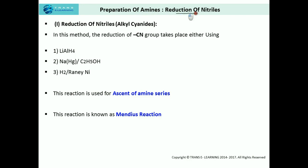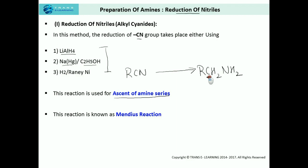Preparation of amines using reduction of nitriles. In this method, the reduction of the cyanide group, or what we call as nitrile group, takes place using lithium aluminium hydride, sodium amalgam in presence of ethanol, and hydrogen with Raney nickel. This reaction is used for ascent of amine series because if we consider the parent alkyl nitrile and reduce it using these reagents, the final product amine has one more carbon atom as compared to the parent cyanide. This reaction is known as Mendius reaction.